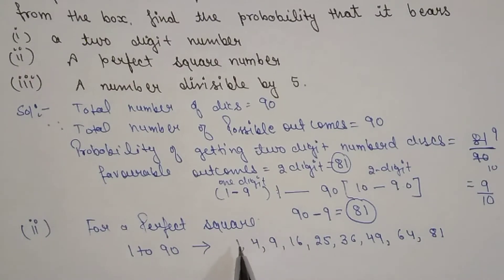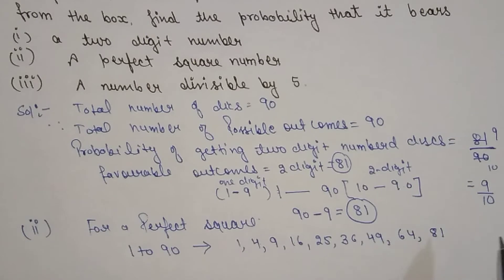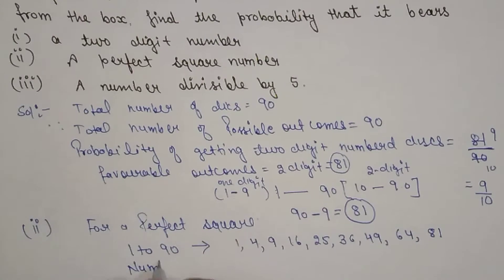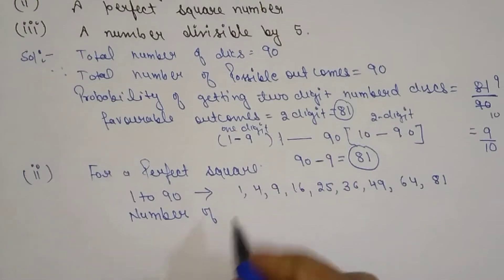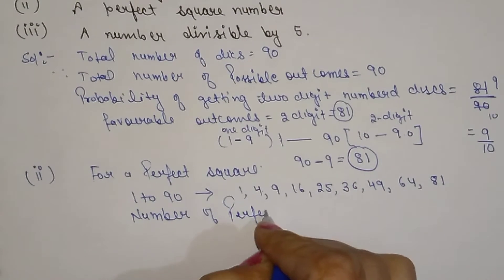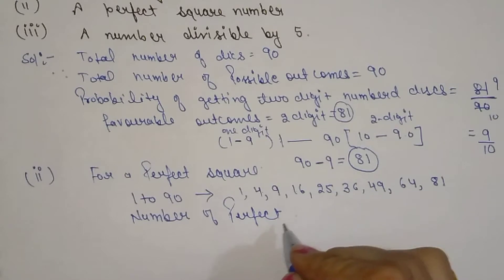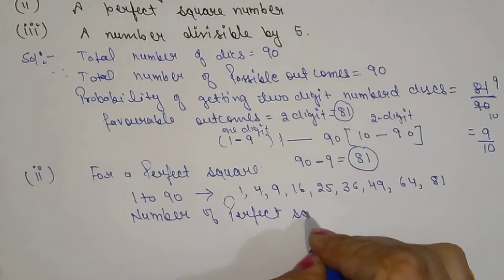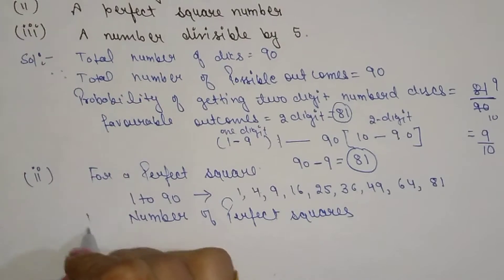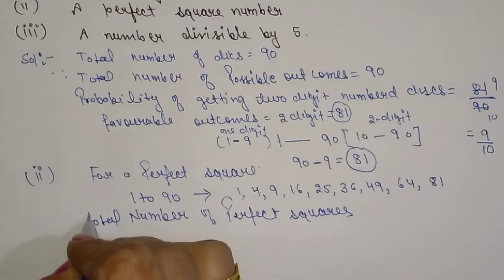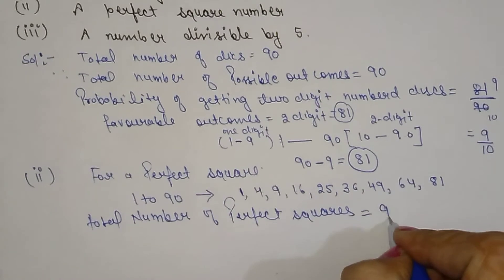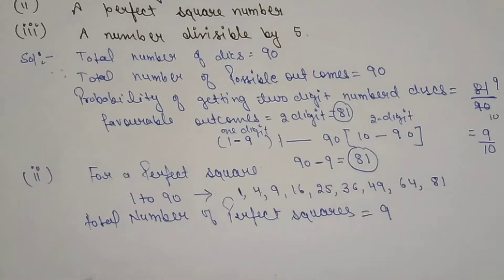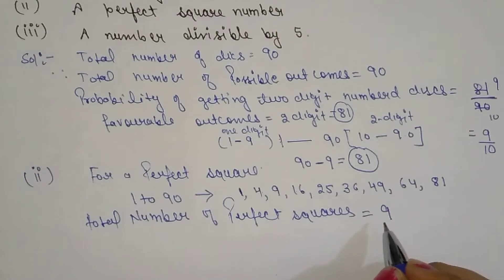So the total number of perfect squares from 1 to 81 is 9. That means the number of favorable outcomes is 9.